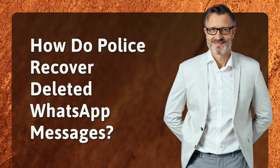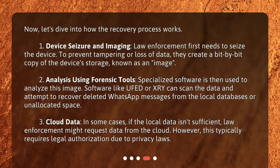How do police recover deleted WhatsApp messages? Now let's dive into how the recovery process works. Step 1: Device seizure and imaging. Law enforcement first needs to seize the device. To prevent tampering or loss of data, they create a bit-by-bit copy of the device's storage, known as an image. Step 2: Analysis using forensic tools. Specialized software is then used to analyze this image. Software like UFED or XRY can scan the data and attempt to recover deleted WhatsApp messages from the local databases or unallocated space.